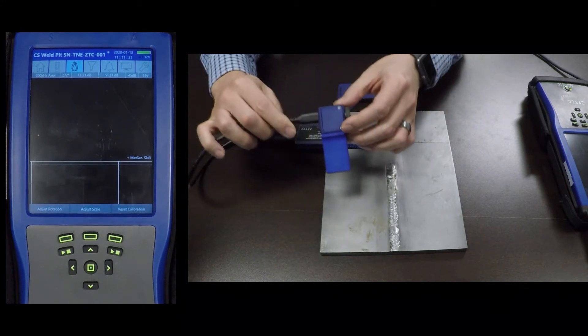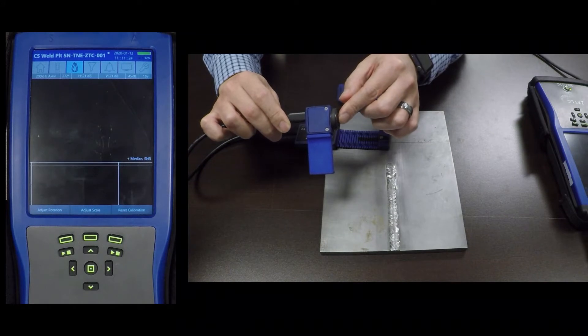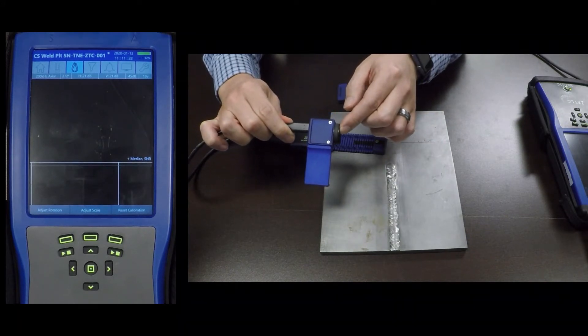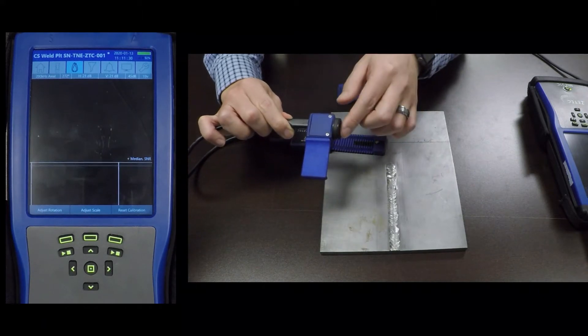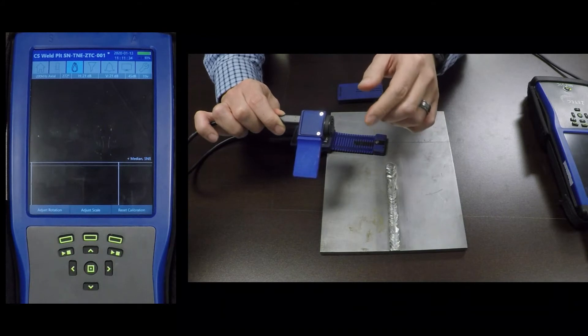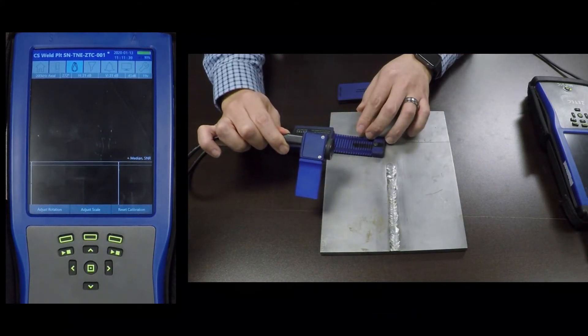All surface probes come with an encoder. You can use the probes with or without an encoder. If you want to do any kind of flaw length or distance measurements, an encoder will be required.